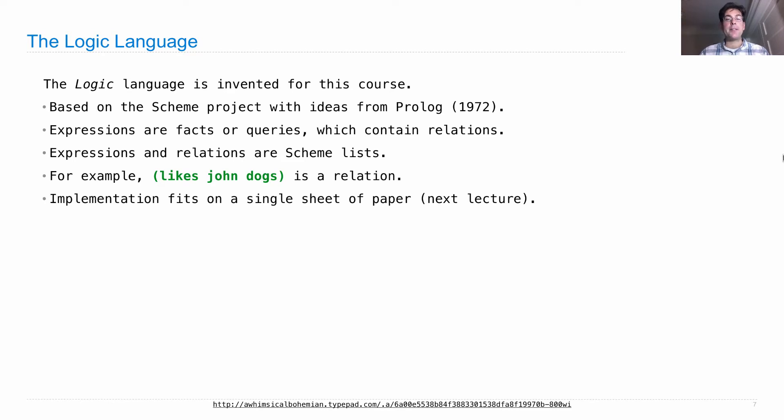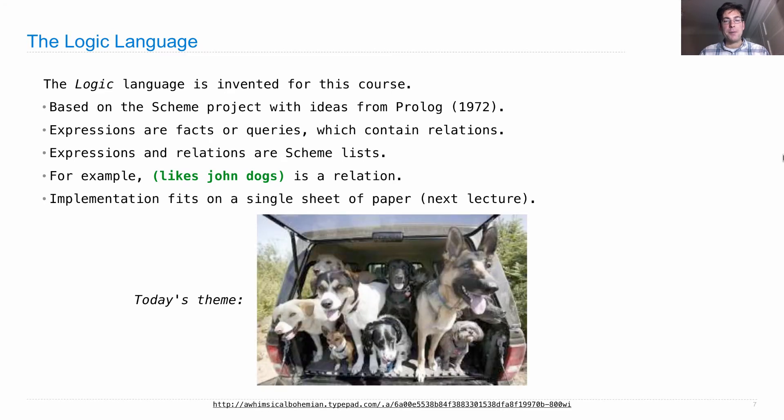The implementation of the Logic language fits on a single sheet of paper, which we'll look at next lecture. We can understand it quite straightforwardly if we understand how the Scheme interpreter works. Today we're going to talk about how the Logic language works, how we write programs in it. Next time we'll talk about how it's interpreted. We need some kind of theme for examples for today, so we're going to use dogs.